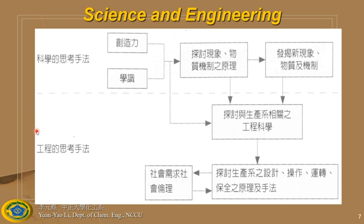In science, you need creativity to invent something new. You learn mathematics, chemistry, physics, and biology. Combined with creativity and knowledge, you can understand the phenomena and mechanisms of materials or substances. You can create something new and observe how it works — that's the scientific part.